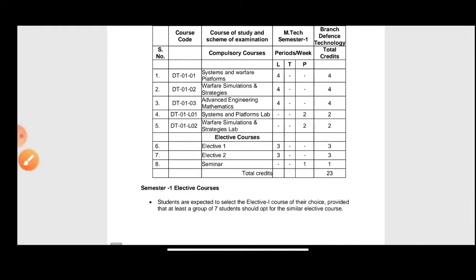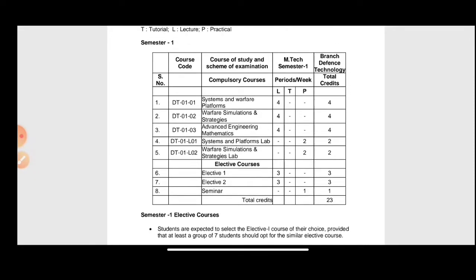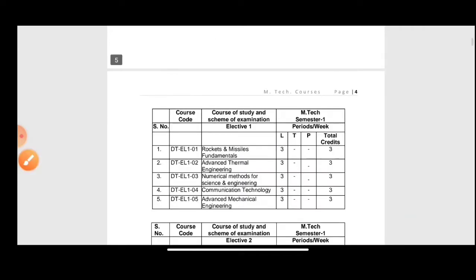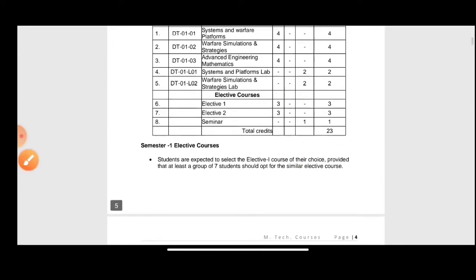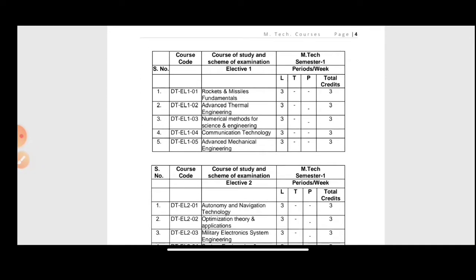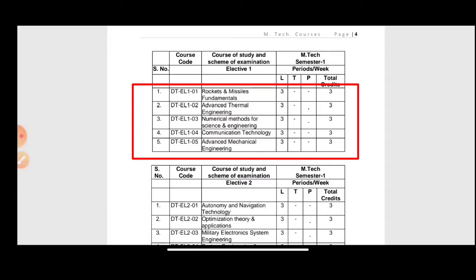For semester one, which is common for all specializations, the compulsory courses are: Systems and Warfare Platforms, Warfare Simulation Strategies, Advanced Engineering Mathematics, Systems and Platforms Lab, and Warfare Simulation and Strategies Lab. There will also be electives — elective one and elective two — each worth three credits. For elective one you have five options and need to choose one: Rocket and Missile Fundamentals, Advanced Thermal Engineering, Numerical Methods for Science and Engineering, Communication Technology, or Advanced Mechanical Engineering.